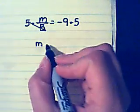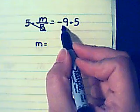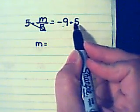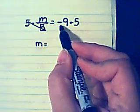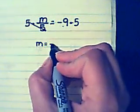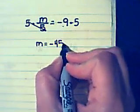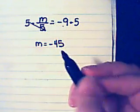Now I need to solve the right hand side. Negative 9 times 5. 9 times 5 is 45. And since one of my numbers is negative, I know that my answer has to be negative 45. So m equals negative 45.